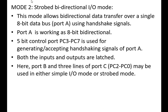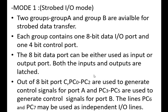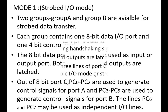Finally, Mode 2, the strobed bidirectional mode. Port A works as an 8-bit bidirectional port, and 5 bits of Port C are used to generate and accept handshaking signals. Mode 2 allows handshaking signals for Port A, and both input and output are latched. Port B and three lines of Port C (PC0 to PC2) may be used in either simple input/output or strobed mode. Those are the functions of Mode 0, Mode 1, and Mode 2 in the operational modes.